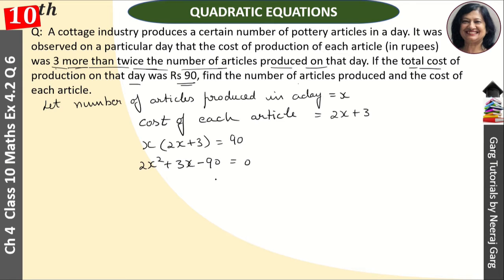Now, we will make the factors. Factors will be 2 into 90, 2x square into 90. So this is our 180x square. We will make the factors, we will make the difference, 3 will come. 180 factors will come. So this is our 15x and 12x. Right? So here we have our 2x square plus 15x minus 12x minus 90. That is equal to 0.